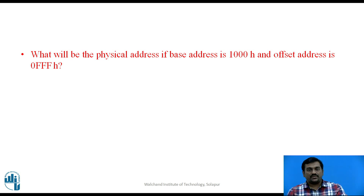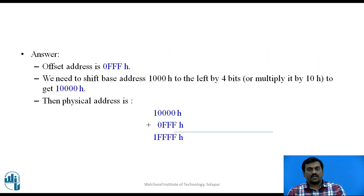What will be the physical address if base address is 1000H and offset address is 0FFFH? The answer is 1FFFFH. The base address 1000H is shifted left by 4 bits to get 10000H. The offset 0FFFH is then added to 10000H to get the final physical address of 1FFFFH.